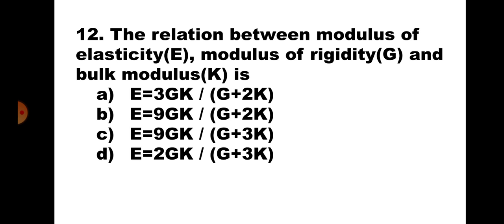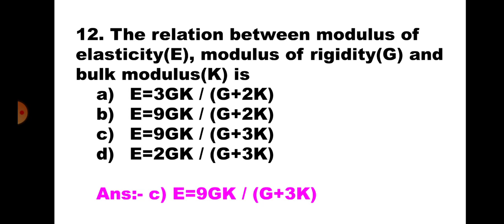Question number 12. The relation between modulus of elasticity E, modulus of rigidity G, and bulk modulus K is: A. E = 3GK/(G + 2K), B. E = 9GK/(G + 2K), C. E = 9GK/(G + 3K), D. E = 2GK/(G + 3K). From E = 2G(1 + μ), express μ in terms of E and G, then substitute into E = 3K(1 − 2μ) to eliminate μ. The correct relation is E = 9GK/(G + 3K). Hence, the correct answer is C: E = 9GK/(G + 3K).